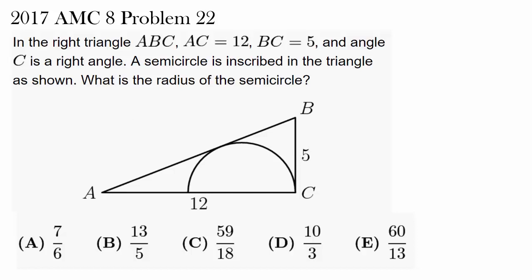and angle C is a right angle, so AB is 13. You can find this using the Pythagorean theorem: AB is the square root of 12 squared plus 5 squared, which gives you square root of 169, or 13.